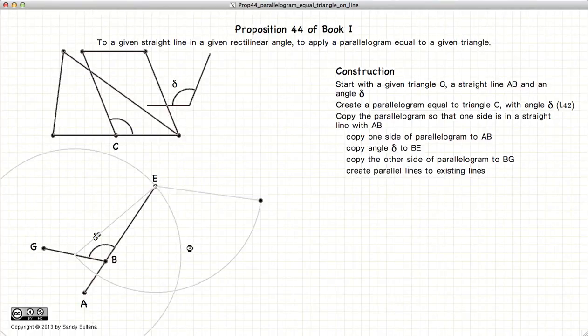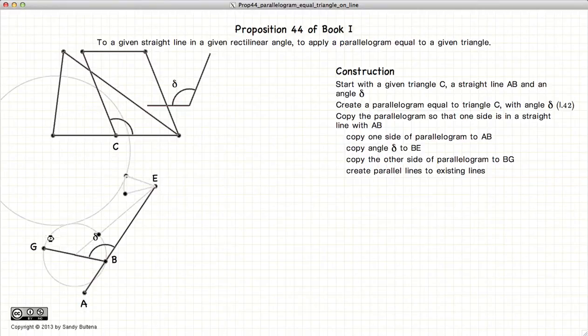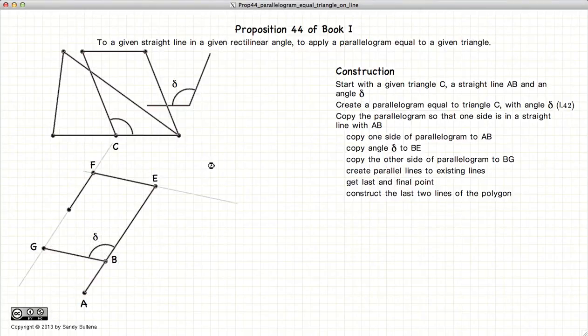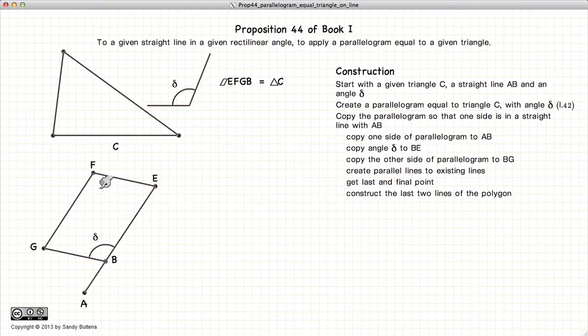Create parallel lines against these GB and GE. Find the intersection and connect the dots. So now this parallelogram is equal in area to our triangle.